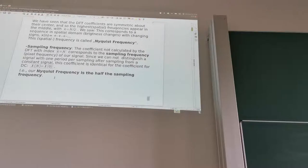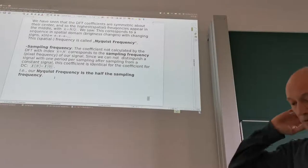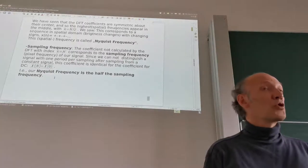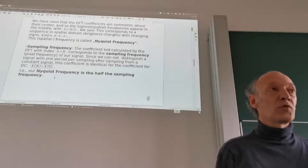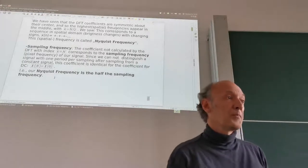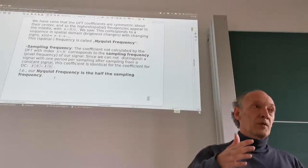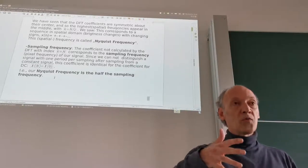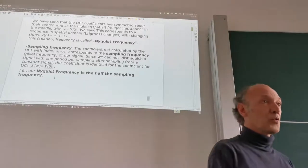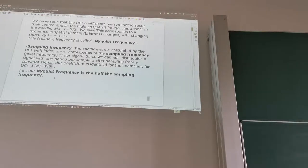This principle also shows up in audio sampling. When you have a CD, an audio CD, it is sampled at 44.1 kHz sampling rate. That means the audio signal can be reconstructed only up to 22.05 kHz — half the sampling rate. That's why your audio frequencies are limited to about 22 kHz in this case.